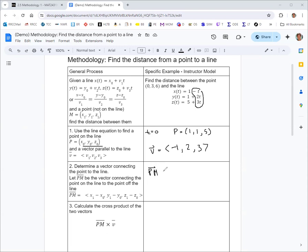So PM, what we use here is (0, 3, 6), that will be our M, that's x1, y1, z1. And then this is x0, y0, z0, and we just subtract those. So we'd have 0 minus 1, 3 minus 1, and 6 minus 5. That will give us the vector <-1, 2, 1>.